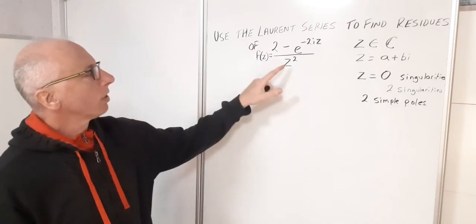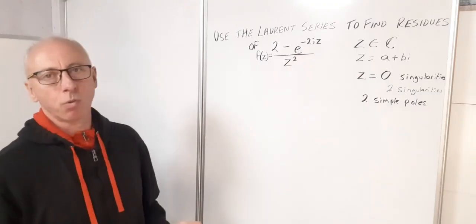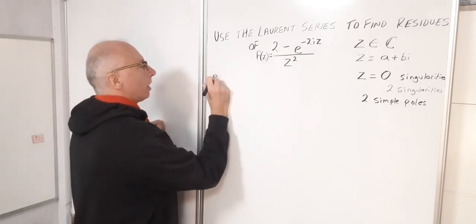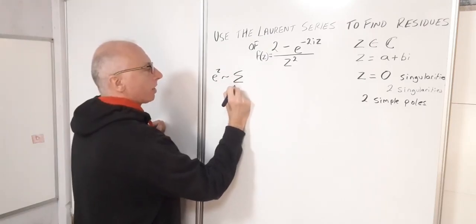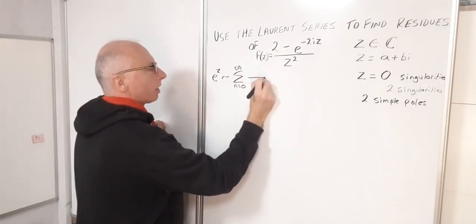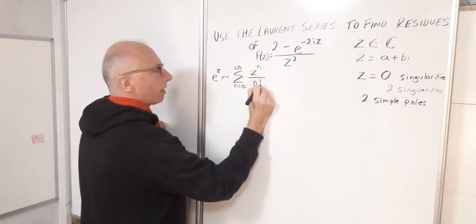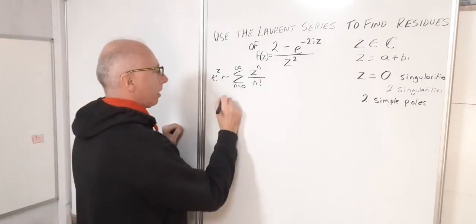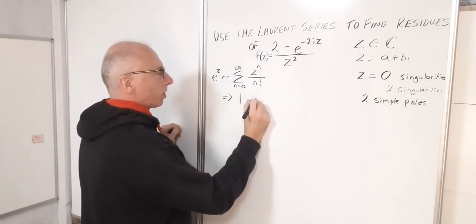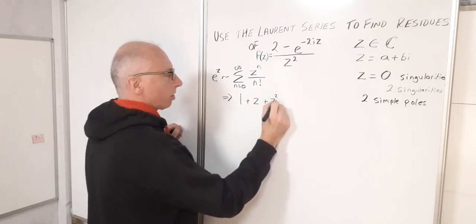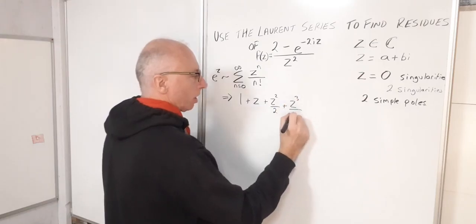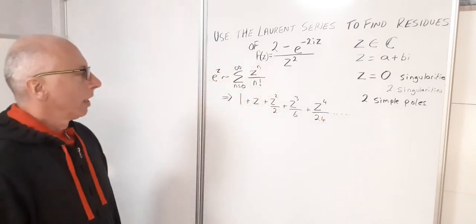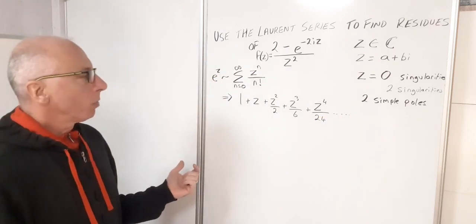Looking at the function again, we have the exponential function. We already know we can create a Taylor series from the exponential function — that's one of the most famous ones. So e^z is represented as the sum from n = 0 to infinity of z^n over n factorial. Expanding this out: 1 + z + z²/2 + z³/6 + z⁴/24, and so on.